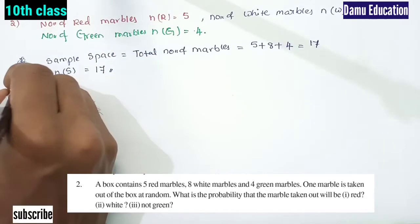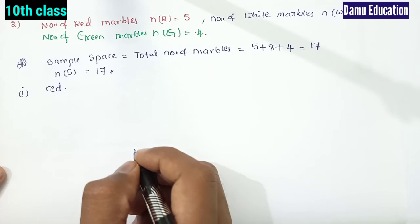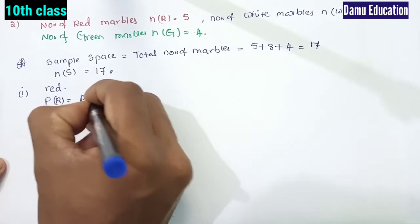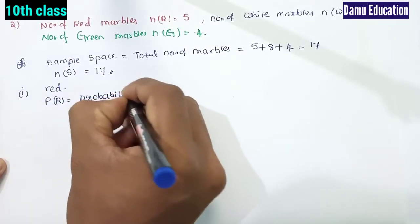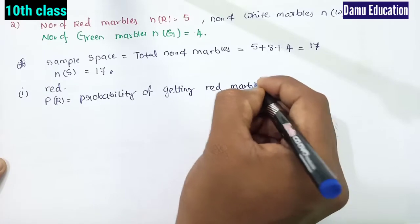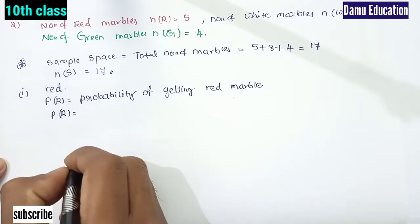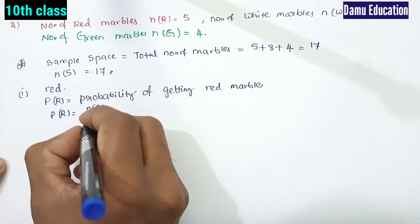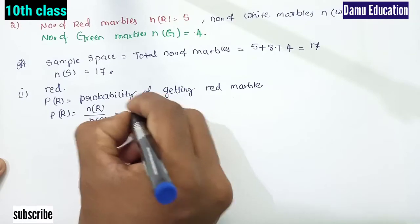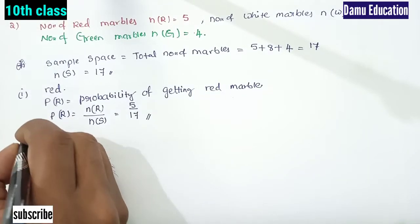First one — the ball is red. So what is the probability of getting a red marble? P of R will be equal to n of R by n of S. Red marbles are 5 and total marbles are 17, so P of R = 5/17. That is the first one.